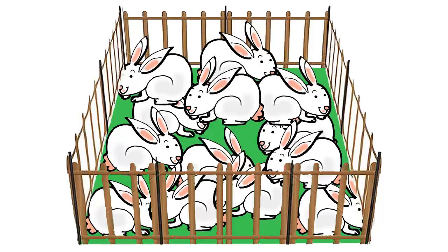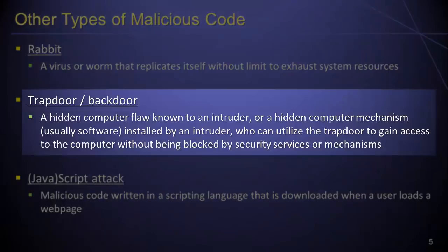Next, trapdoors, which are also known as backdoors, are hidden software devices that are installed by a malicious party in order to gain surreptitious access to a computer system while avoiding or circumventing the system's security mechanisms.